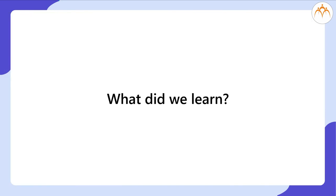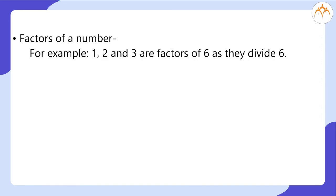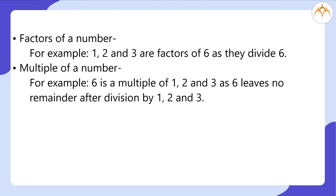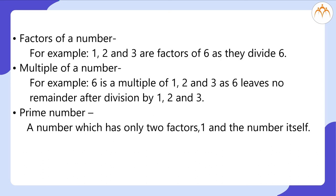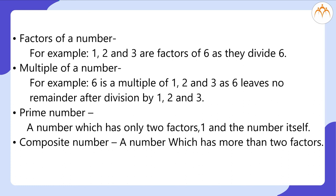What did we learn? Factors of a number. For example, 1, 2 and 3 are factors of 6 as they divide 6. Multiple of a number. For example, 6 is a multiple of 1, 2 and 3 as 6 leaves no remainder after division by 1, 2 and 3. Prime number: A number which has only 2 factors, 1 and the number itself. Composite number: A number which has more than 2 factors. 1 is a number which is neither prime nor composite.